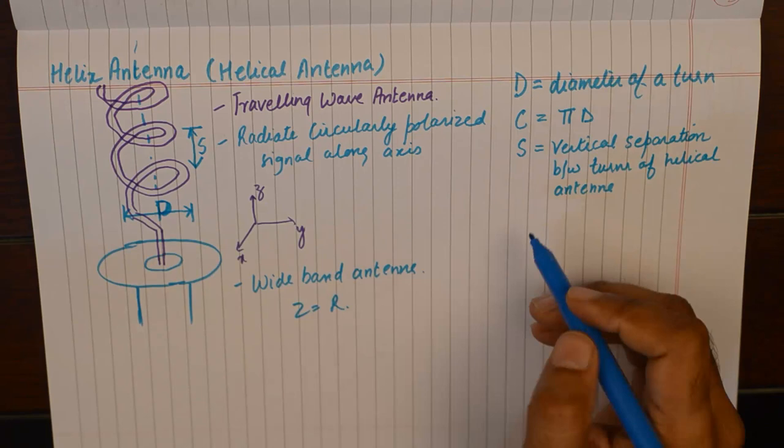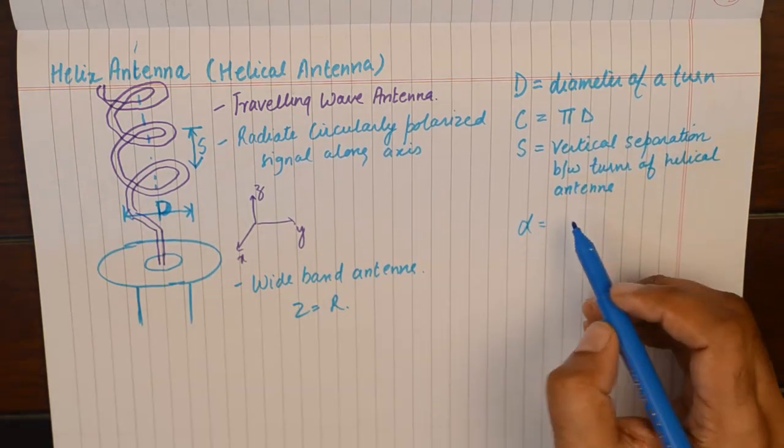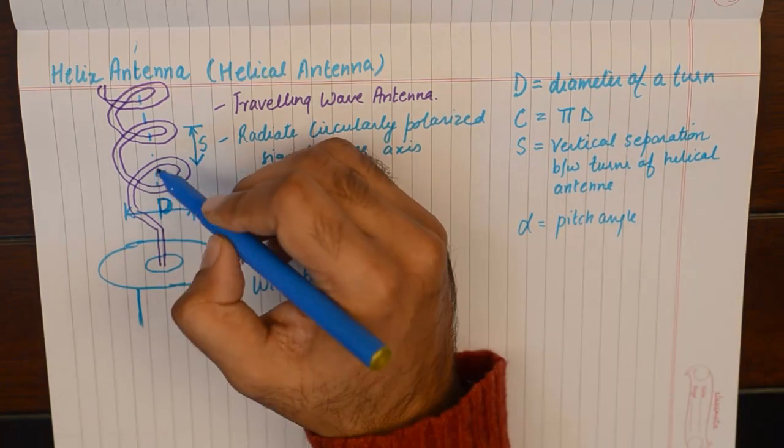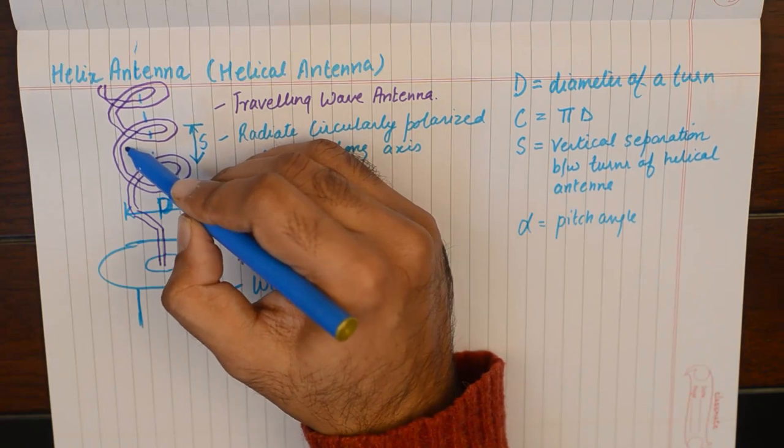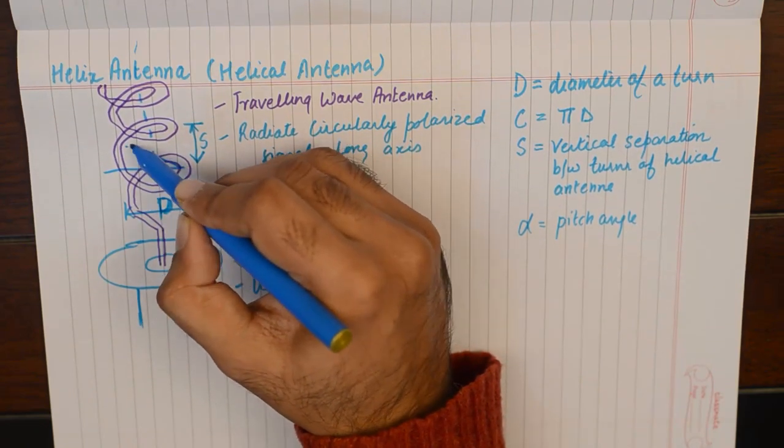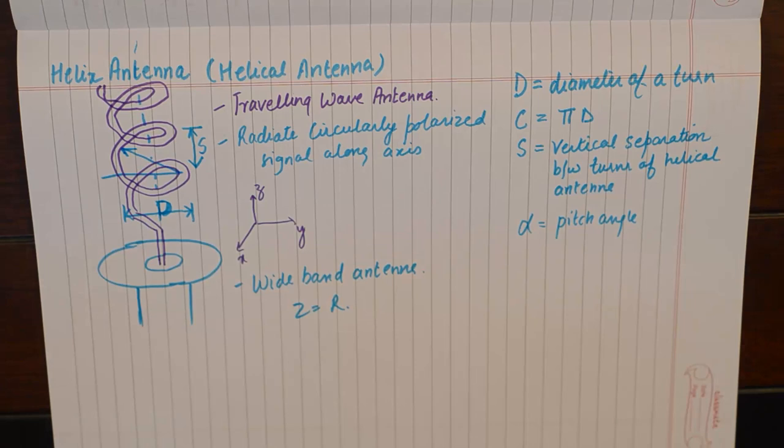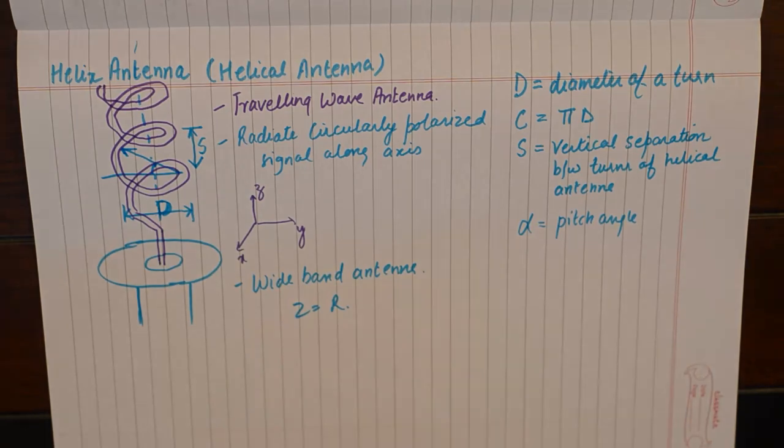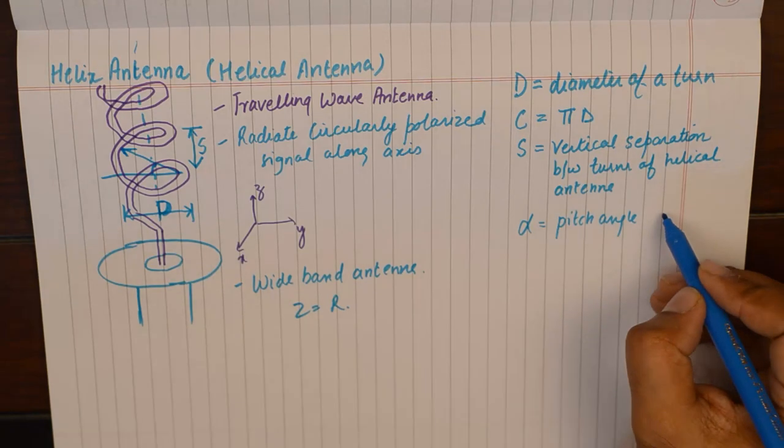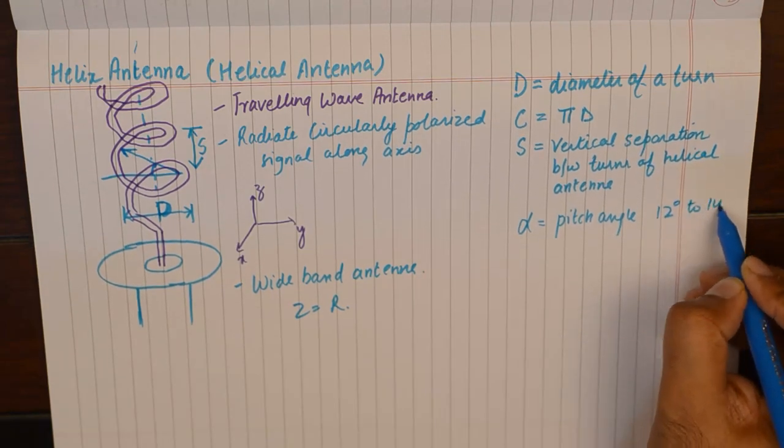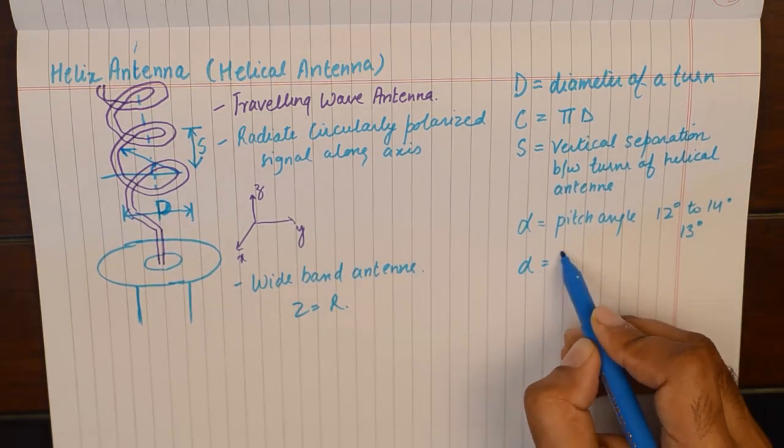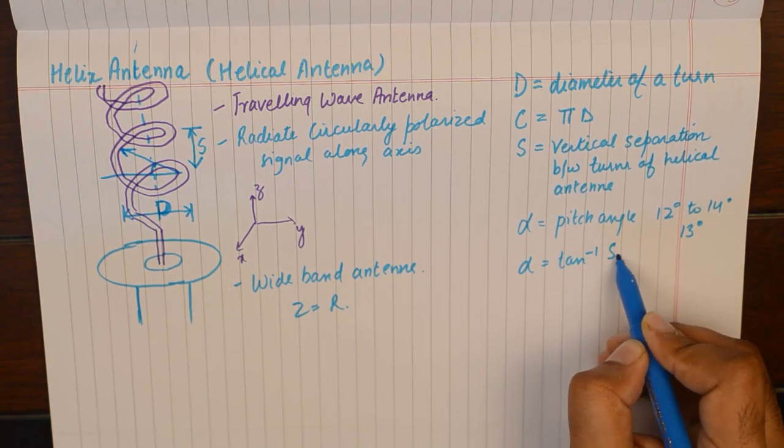This will be a constant quantity. All the turns are going to be uniformly spaced. Finally, we have a parameter known as alpha, which is known as pitch angle. The pitch angle will decide the angle by which these two turns are separated. If the pitch angle is higher, there'll be a greater gap between two turns. We want the pitch angle to be between 12 to 14 degrees, and the typical value is 13 degrees. Mathematically, it is tan inverse S upon C.